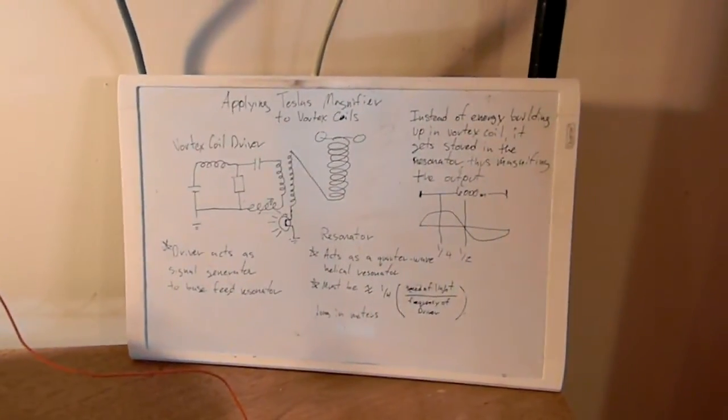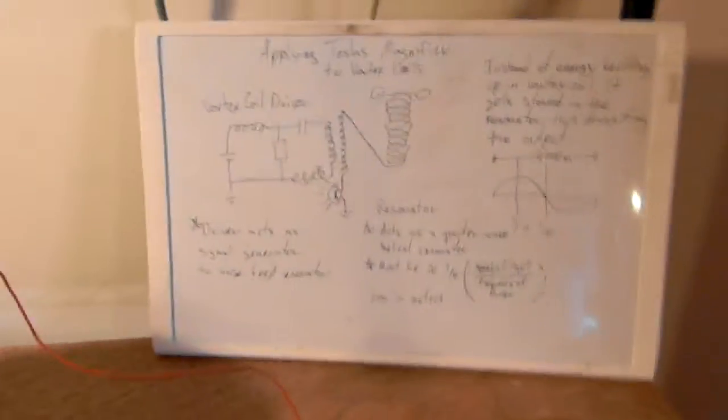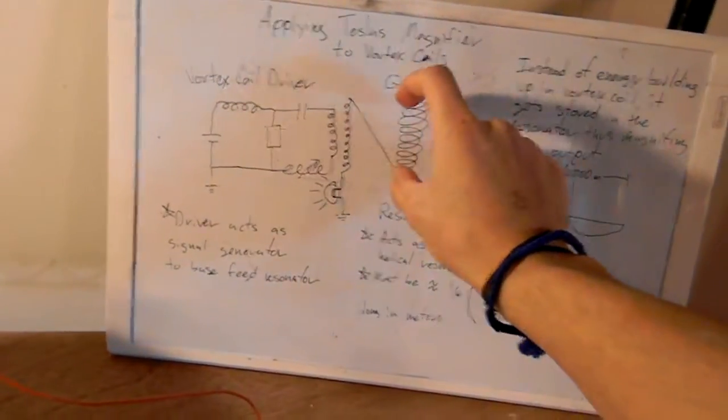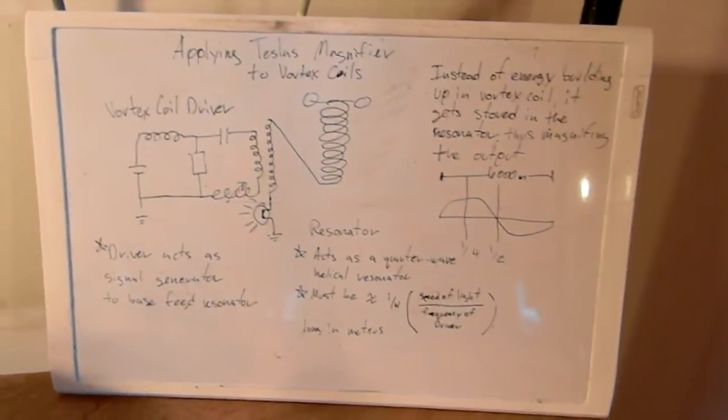So that's where it gets unconventional, but what it really is doing is I could take the secondary and I could put a light bulb across it and I could put the energy in the light bulb directly.